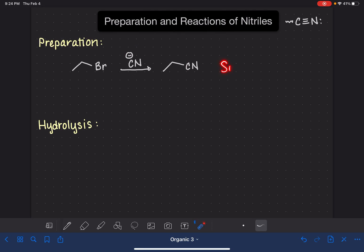And again, this is an SN2 reaction, so we do have to be a little bit careful about the type of alkyl halide that we're using. Another method that we can use to prepare a nitrile is with an amide, and using thionyl chloride, SOCl2.